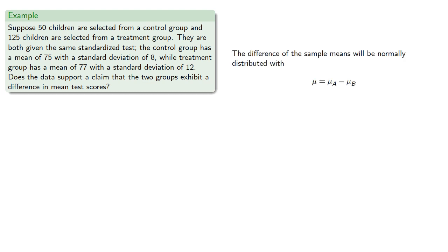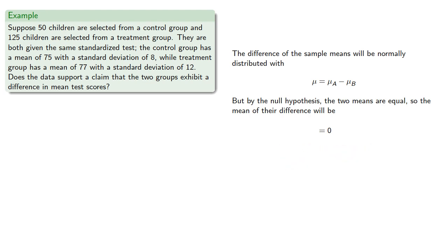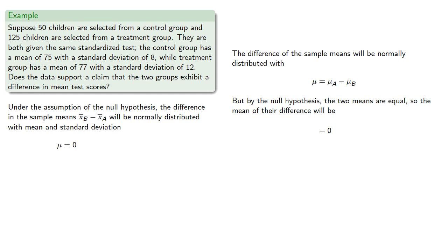The difference in the sample means will be normally distributed with mean equal to the difference in the means. But by the null hypothesis, the two means are equal, so the mean of their difference will be zero. Under the assumption of the null hypothesis, the difference in the sample means will be normally distributed with mean mu equals zero.